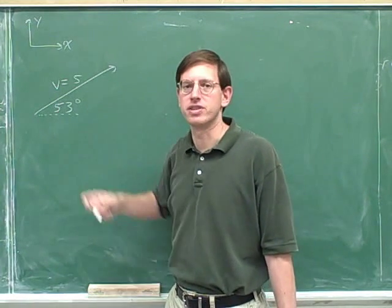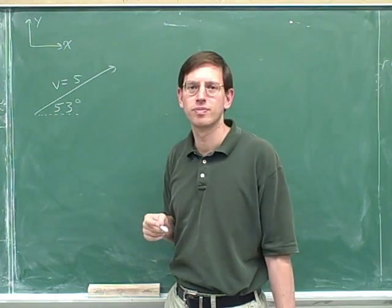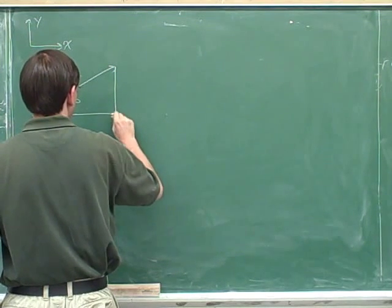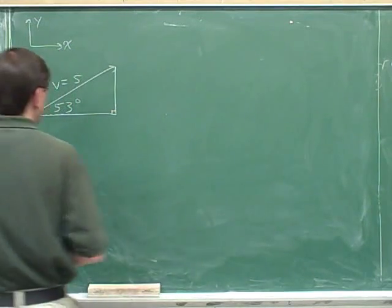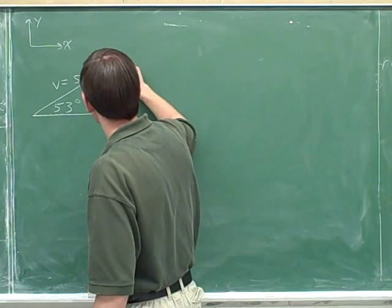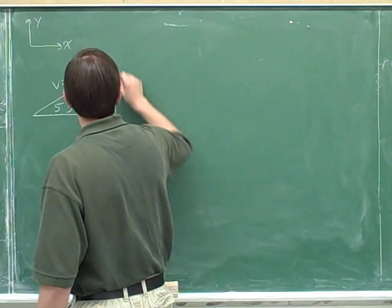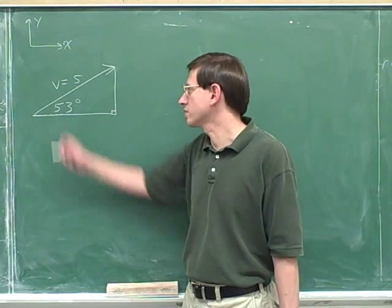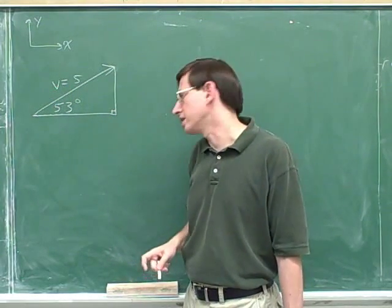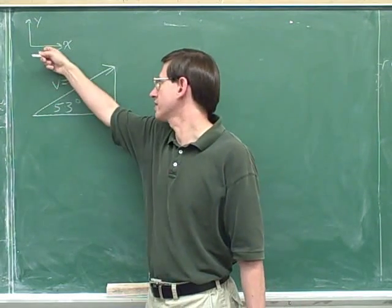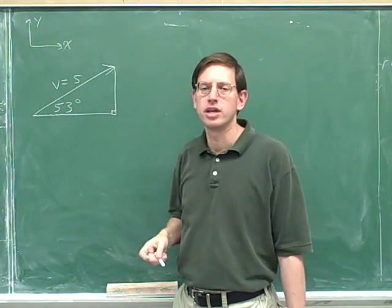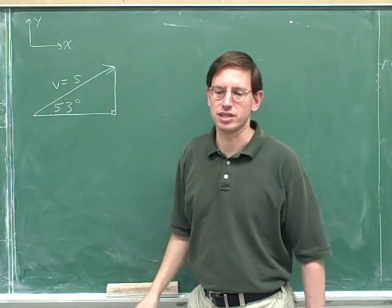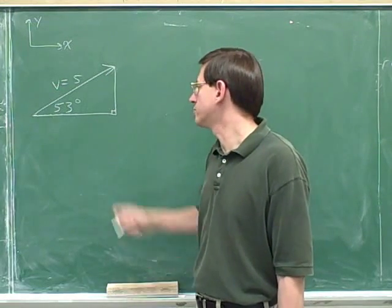See if you can pause the video and draw the components of this vector — you don't need to calculate them, just draw them. Here's the right triangle using the overall vector as the hypotenuse. This leg is parallel to the x-axis, and the vertical leg is parallel to the y-axis. In order to draw the components, you draw a right triangle using the overall vector as the hypotenuse, where each leg is parallel to one of the axes.